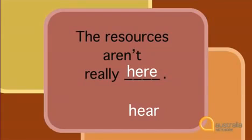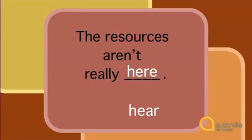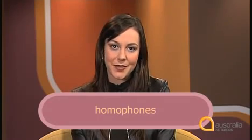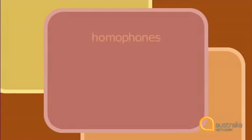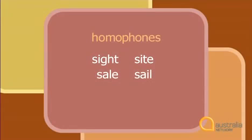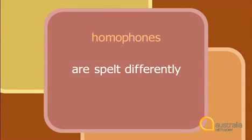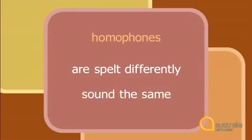There are two different types of homonyms. The ones we've looked at so far are called homophones because they sound the same even though they are spelt differently. Some other examples of homophones are sight/site, sail/sale, fair/fare, and through/threw. So homophones are words that are spelt differently but sound the same.